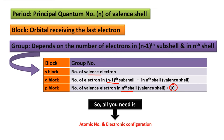So basically, to decide period, block, and group, all you need to know is the atomic number of the element and its electronic configuration. We will now discuss some examples — one element from s-block, one from d-block, and one from p-block — so we can see all three possibilities.